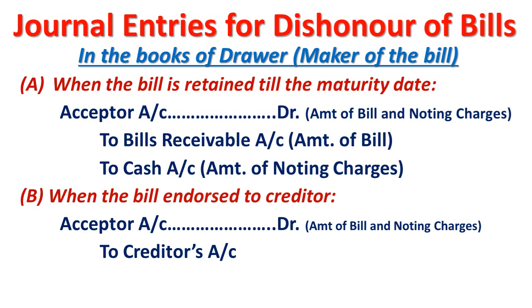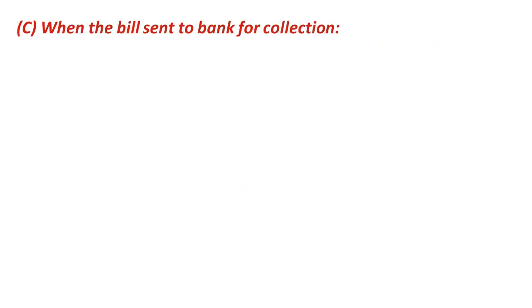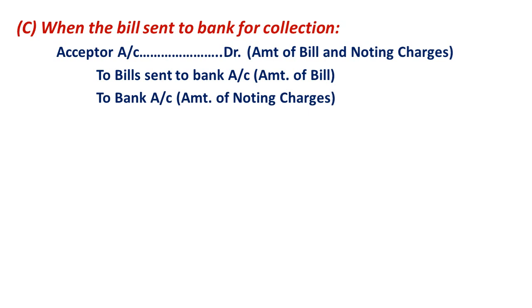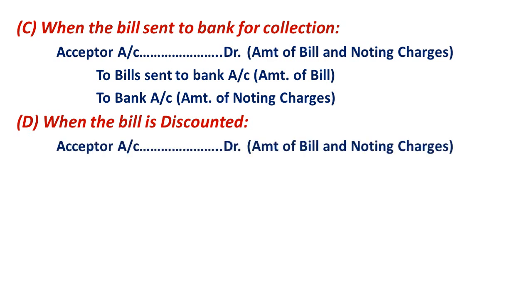Situation three: when the bill is sent to bank for collection — Acceptor or Drawee Account Dr., To Bills Sent to Bank for Collection, To Bank with the amount of noting charges. Situation four: when the bill is discounted with the bank — as already stated, Acceptor Account or Drawee Account Dr., To Bank with the amount of noting charges.